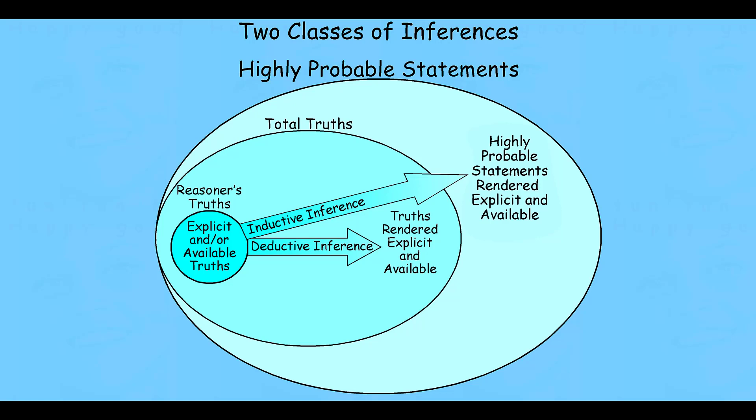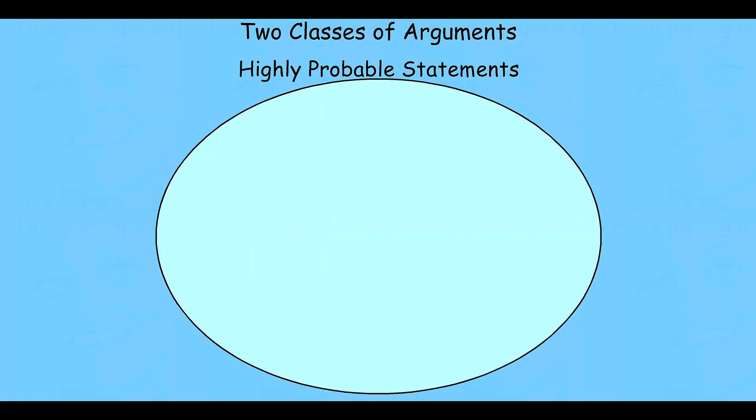When we turn our attention to arguments, we discover that they have almost the exact same structural relationship that we observed when we talked about inferences. So, we can define that class of statements that are highly likely to be true, given what the reasoner knows. Within that, we can define that subset of things that absolutely have to be true, given what they know. Within that, we have this subset of things that they really do have explicitly available for them.